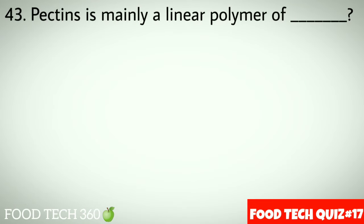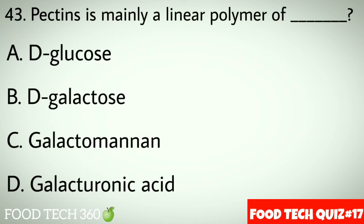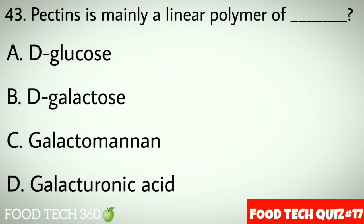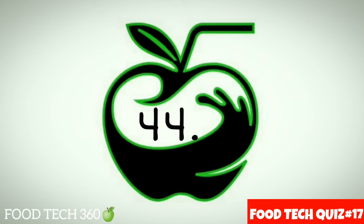Question number 43: Pectin is mainly a linear polymer of dash. Options: A. D-Glucose, B. D-Galactose, C. Galactosamine, D. Galacturonic acid. Correct answer: D. Galacturonic acid.